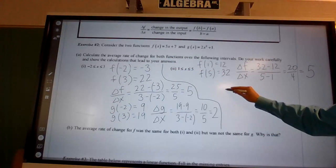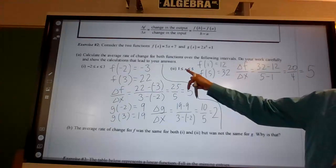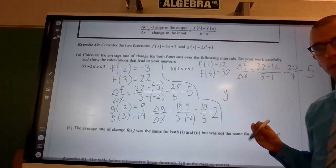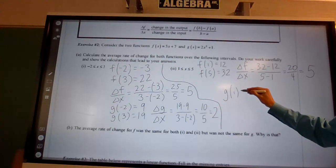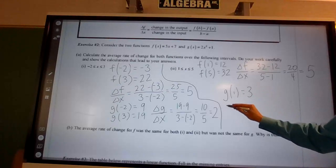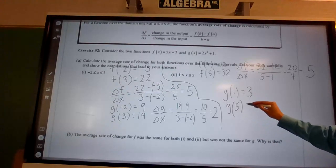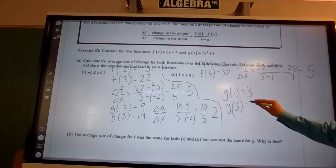Now again, I need to do my g of x, because this is the average rate of change for f of x over that interval. So now I do g of 1, which equals 3, and g of 5, which equals 51.